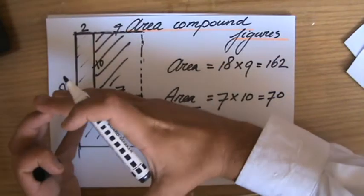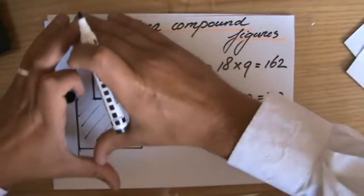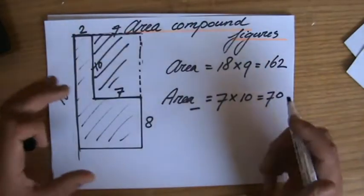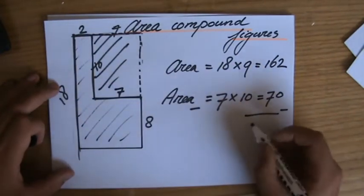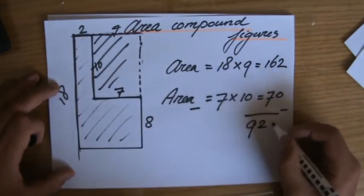Yeah so basically I've made the compound figure here, I found the total area of that, and I'm going to subtract it with that part I'm not interested in. 70. And that is going to give me also 92.